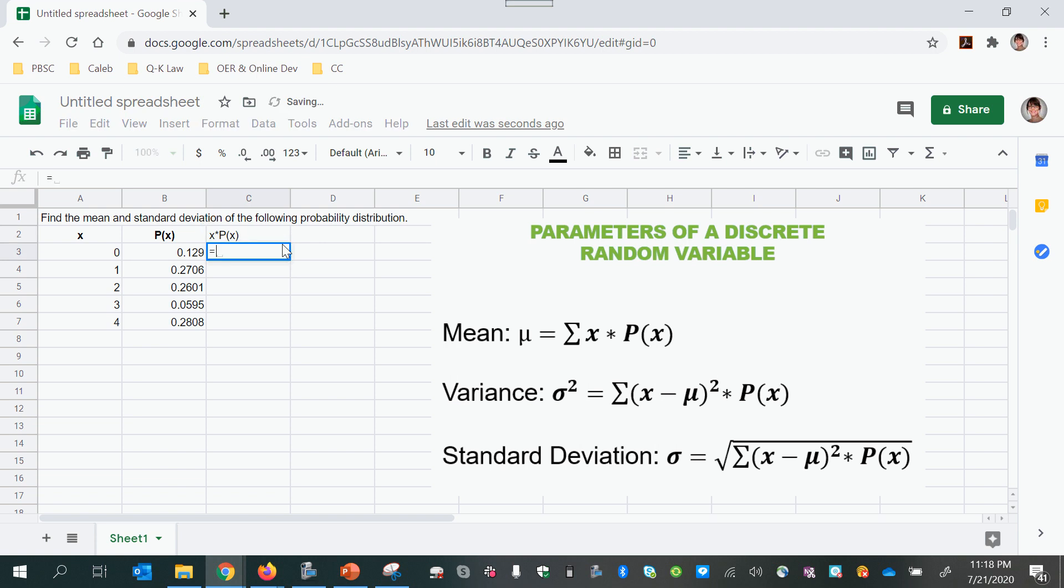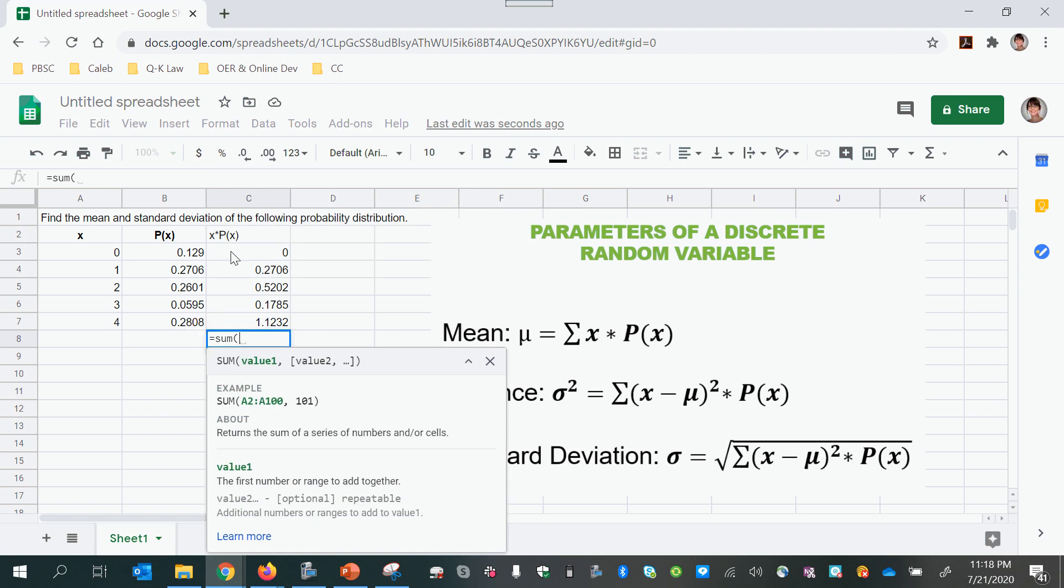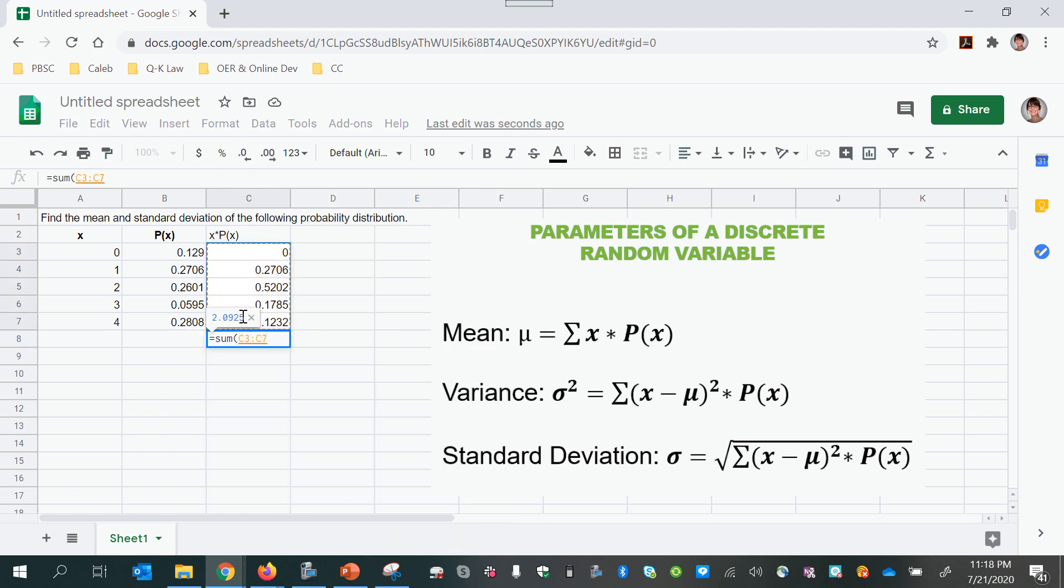This should feel similar to how you did a weighted mean. So I just multiplied the first and then copied the formula down. So I've done each product x times p of x. Now I need to sum them up. So I'm just going to use the sum function and select my values to get my mean of 2.0925.